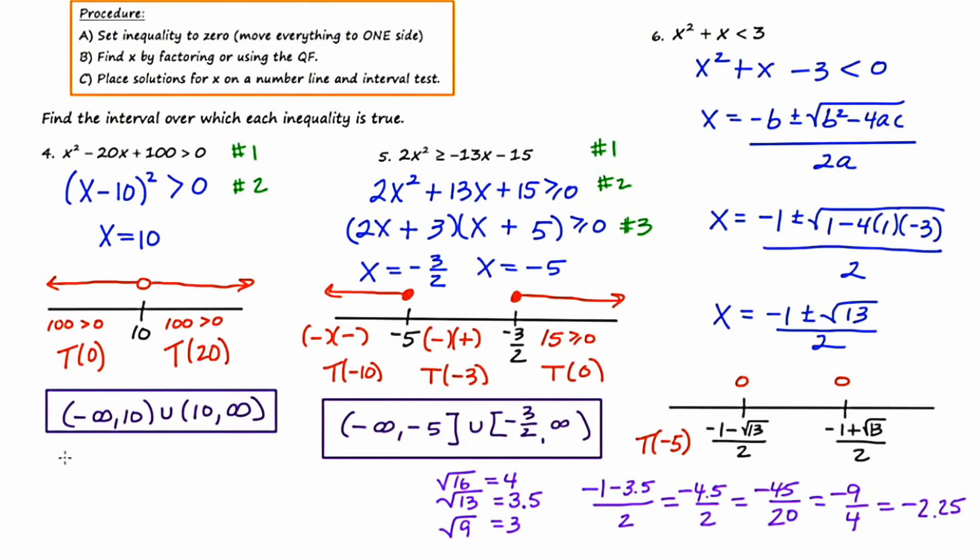Now I'll do the same sort of thing for the other expression, negative 1 plus the square root of 13 over 2. And I'll do that over here. So I'm going to say negative 1 plus 3.5 all over 2. So this turns out to be 2.5 over 2, or 25 over 20. Dividing top and bottom by 5, I get 5 fourths, which is the same as 1 and a quarter, or 1.25. What this means is for the middle region, I can choose 0. And for the right region, I'll pick something larger than 1.25. So to be safe, I'll use positive 5.